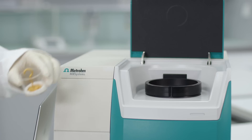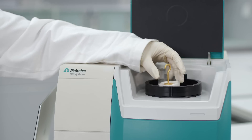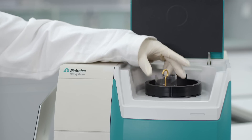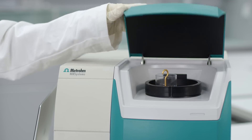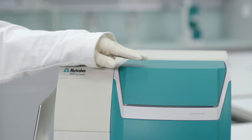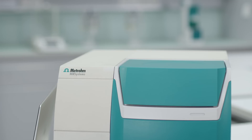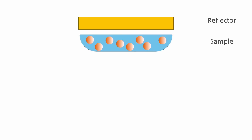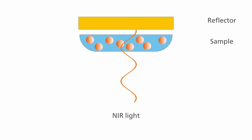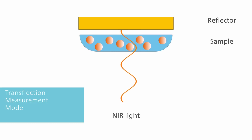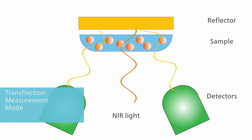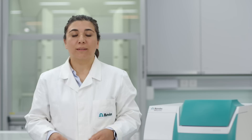The transflection mode is most suitable to measure creams, pastes, and gels. This mode combines transmission and reflection. A reflector is placed behind the sample, which reflects any unabsorbed NIR light back to the detector.